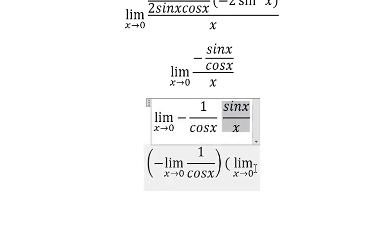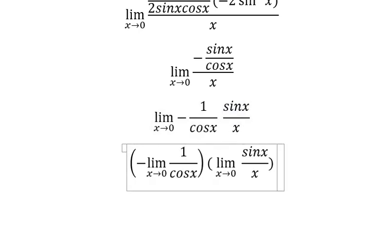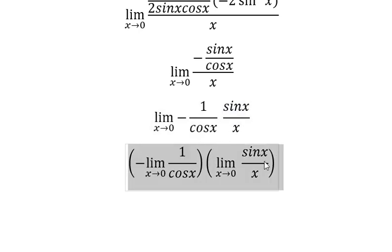That's it about this one. We know that this one equals to number one. We have x approach to number zero. We put in here cosine of number zero, you get one. So that means we will get negative number one.